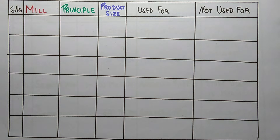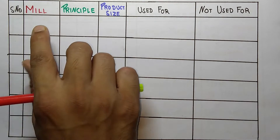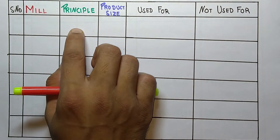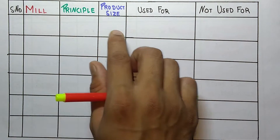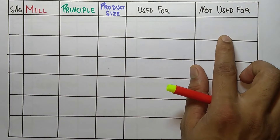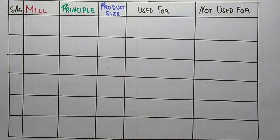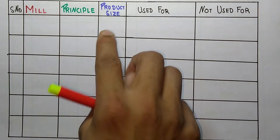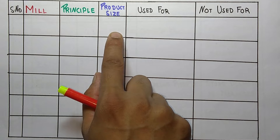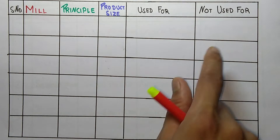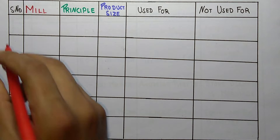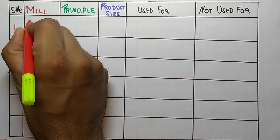Hello students, welcome to the channel Pharma4U. Today in this video we are going to cover size reduction equipment. We will discuss the type of mill, their principle, the product size, and what each is used for and not used for. Sometimes the question may ask which mill works on which principle, what the product size or range is, or which materials it is used for or not used for. The first one is the cutter mill.